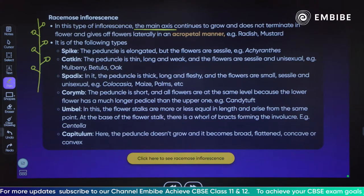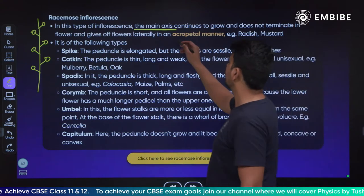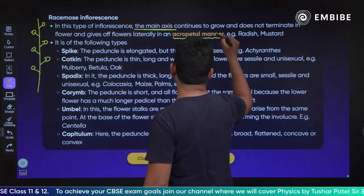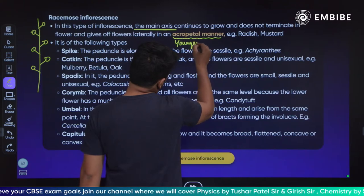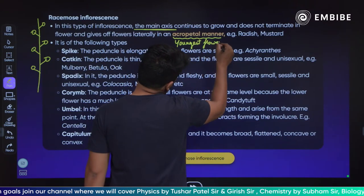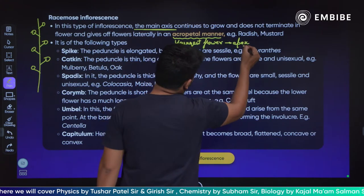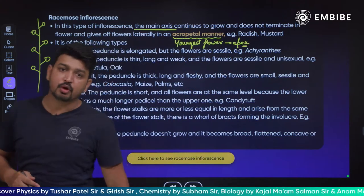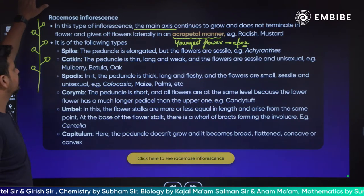Let me explain acropetal manner. The youngest flower is present at the apex — at the very top, your youngest flower is present. So acropetal manner means the youngest flower is at the apex. Examples are radish and mustard.